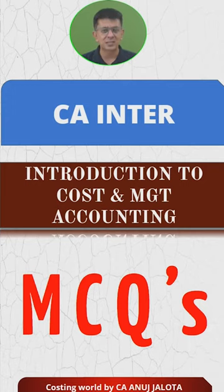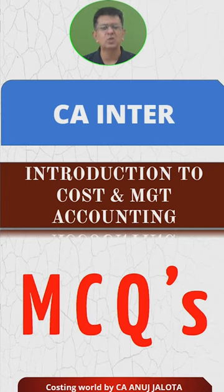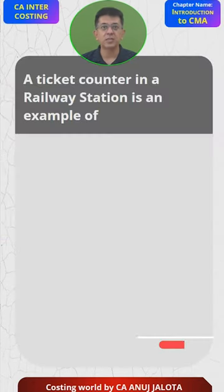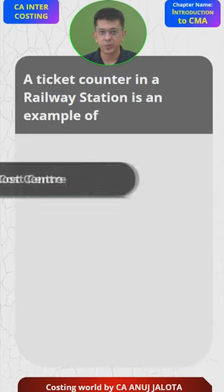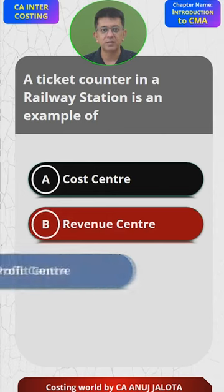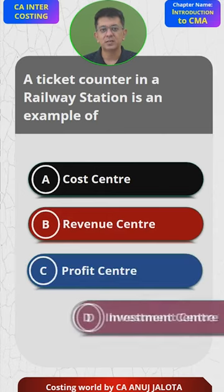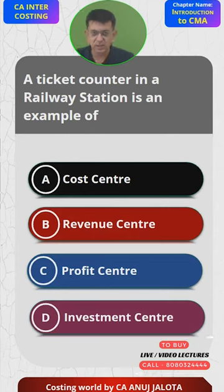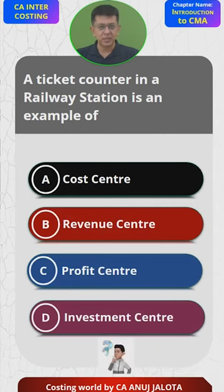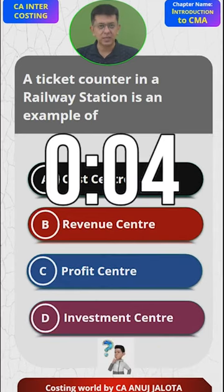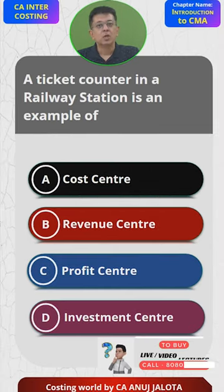In case you want to access our courses of CA Inter costing and FM, the link will be in the description. For any help, you can call us on 8080-32444. The question for today is: a rail ticket counter in a railway station is an example of — A) cost center, B) revenue center, C) profit center, or D) investment center. Think of the answer — not a very difficult one.